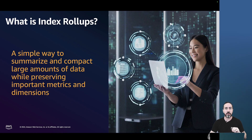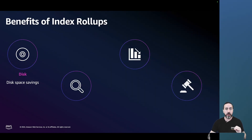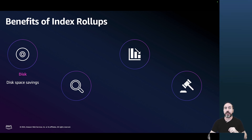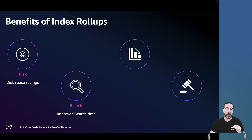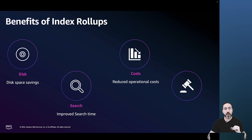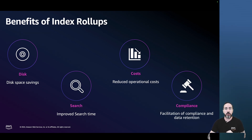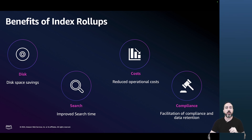Let's talk about the key objectives and benefits of using index rollups. By reducing the size of your indices, index rollups can help you save disk space costs, which can be significant for large datasets. Improved search time is another key benefit — with rollup data being pre-summarized, queries can often be executed faster, leading to better performance for your application. They can also reduce operational costs by making data management more efficient and requiring fewer resources. Additionally, they can facilitate compliance and data retention by providing a streamlined way to manage and retain summarized data over long periods.